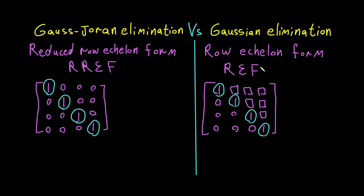Next, we will solve many examples on Gauss elimination. As I mentioned, the Gauss-Jordan reduction method and Gauss elimination are easy to distinguish, especially when shown graphically. That's it — see you next time.